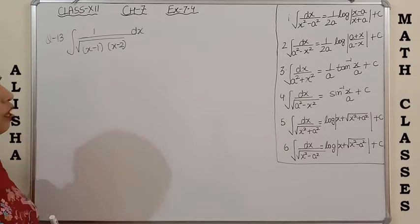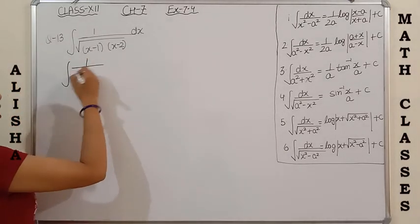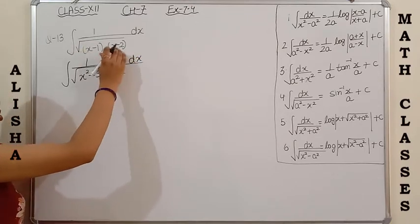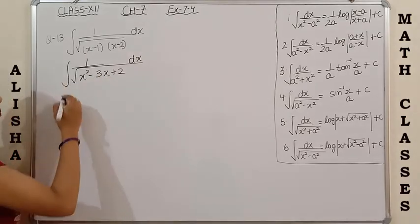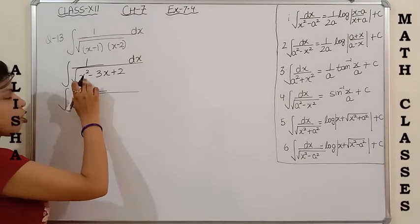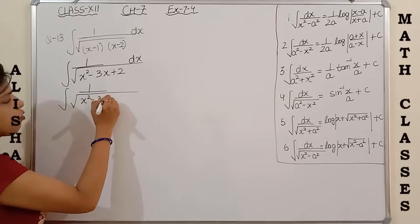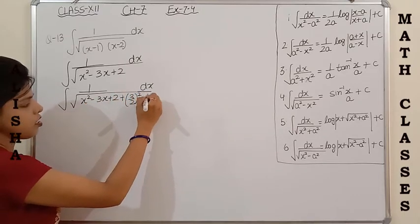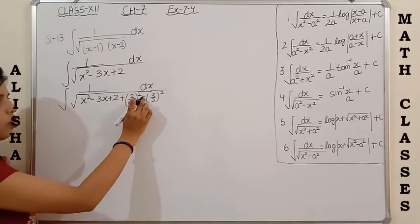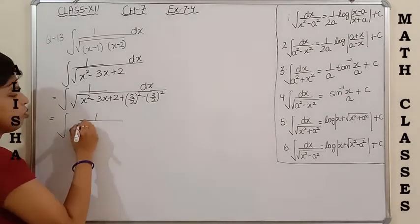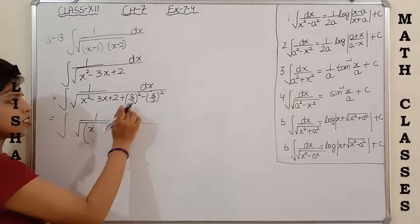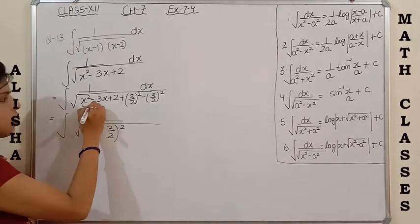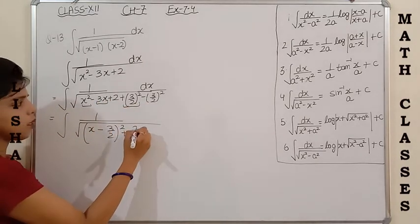Question 13: integrate 1/√((x-1)(x-2)). First expand to get x² - 3x + 2. Applying the complete square method — coefficient of x² is 1, so skip step 1. Coefficient of x is -3, so half is 3/2 — add and subtract (3/2)². Using the complete square shortcut: write (x - 3/2)² with a negative sign in between (since coefficient of x is negative). Remaining terms: 2 - (3/2)² = 2 - 9/4.